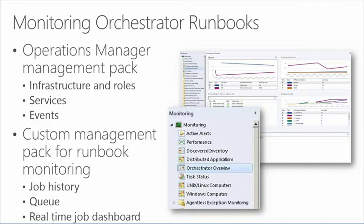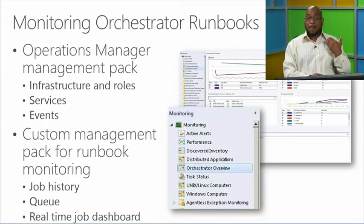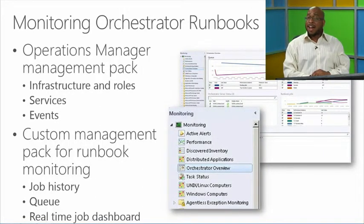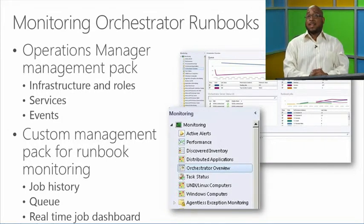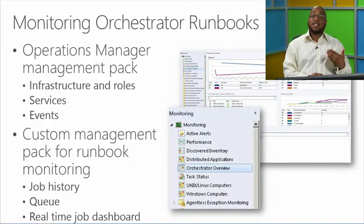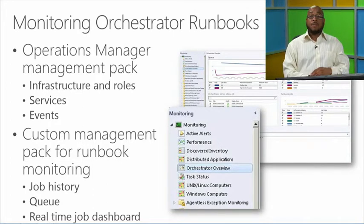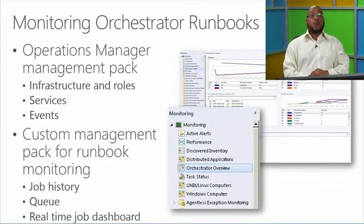We also have a custom management pack for runbook monitoring where I can monitor job history and the queue. I want real-time information around how I'm performing. You'll see a dashboard similar to what's on screen — where I'm seeing performance, where I'm seeing growth, where potential thresholds are being met — and I can look at a number of different attributes within that monitoring. This is called the Orchestrator Overview, where I can gather all that information.